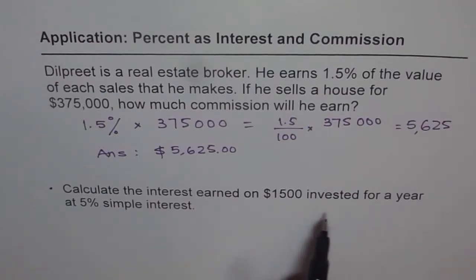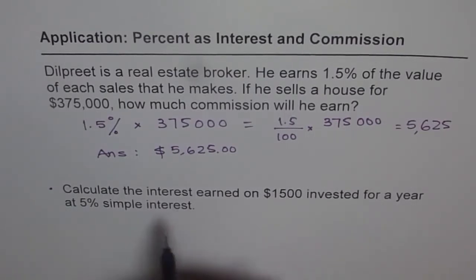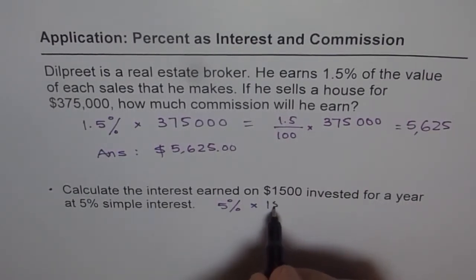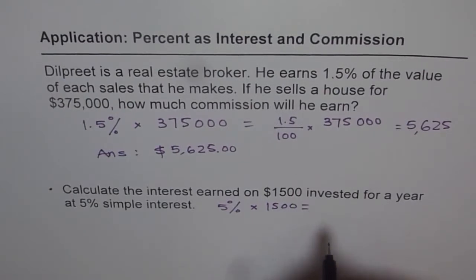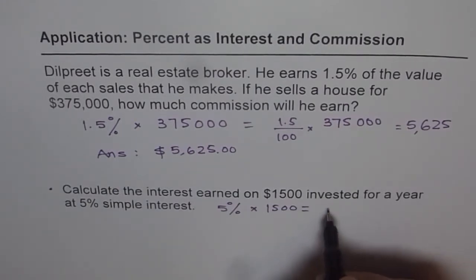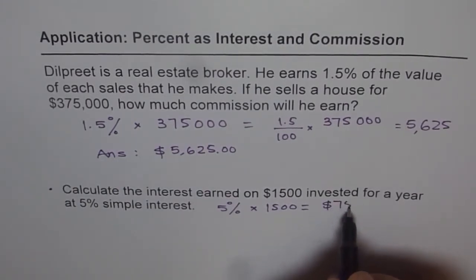Simple interest means you earn 5% on the amount invested. So it should be 5% of — meaning times — $1,500. Now, 5% is 5 over 100, so we do 5 divided by 100 times 1,500, which equals 75. So we get $75 as our answer.